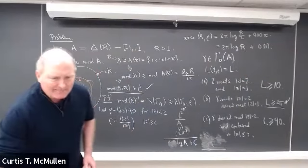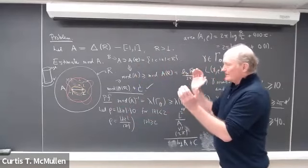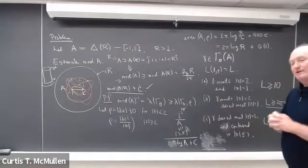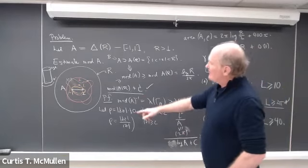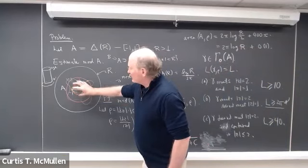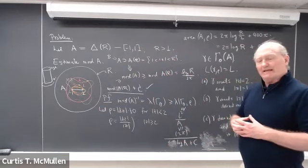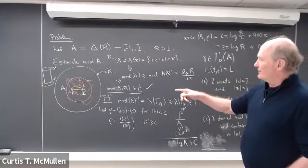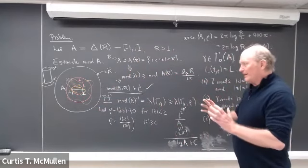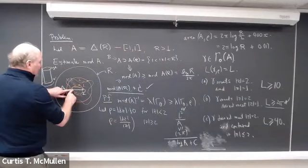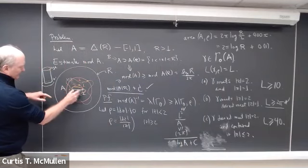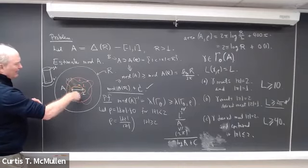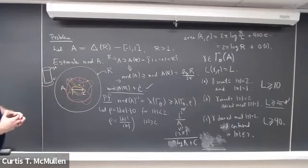That's an example of how one can bound the modulus when one of the complementary components of the annulus has no interior. You can still get good bounds, and the bound is just about what you'd expect if this were a round ball — changing this interval to a round ball barely changes the shape of the annulus. There's another approach to this proof, and the main intuition is that it almost didn't matter what this thing was — whether round, an interval, or a fractal curve. What mattered was its diameter, which keeps the loops from getting too short.